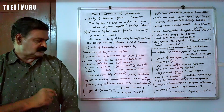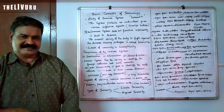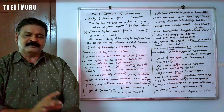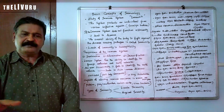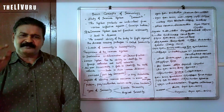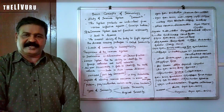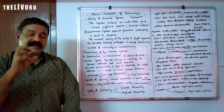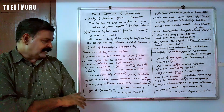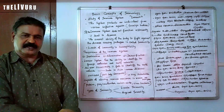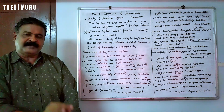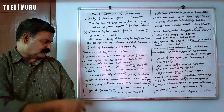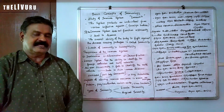Acquired immunity is specific, whereas innate immunity is non-specific. We will now look at innate immunity and acquired immunity one by one.